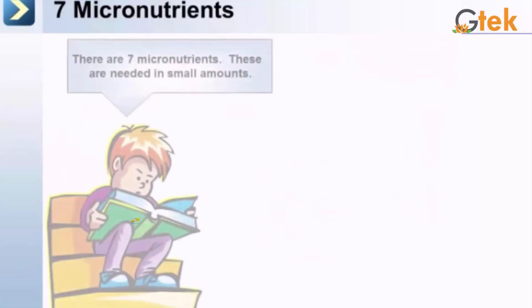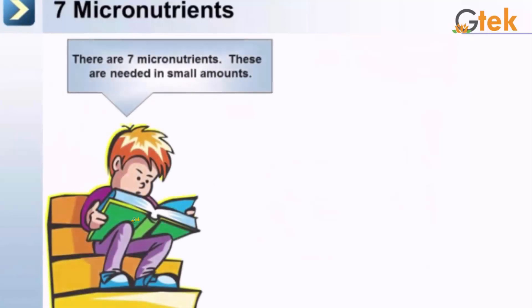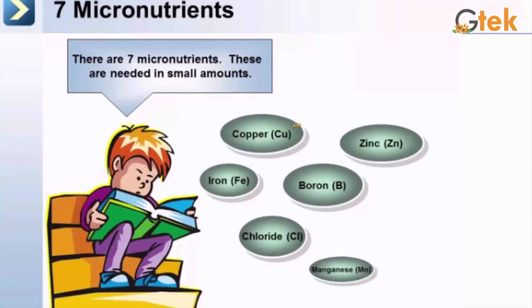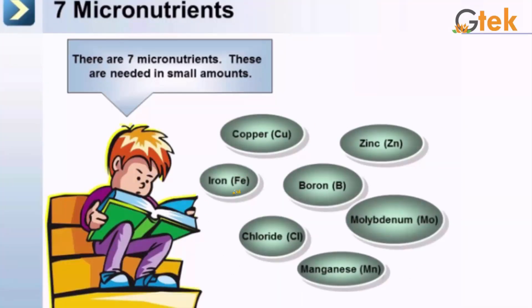Now we are going to see the 7 micronutrients, which are needed in small amounts. The micronutrients are copper, iron, boron, zinc, molybdenum, manganese, and chloride — these are the 7 kinds of micronutrients.